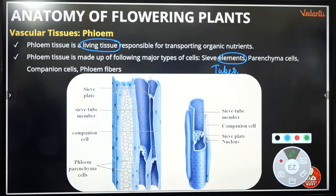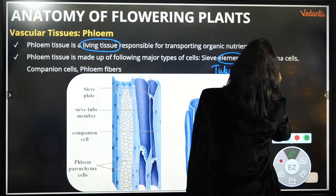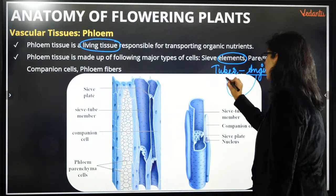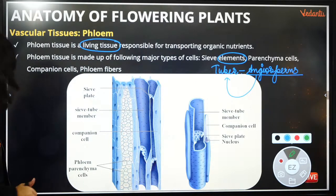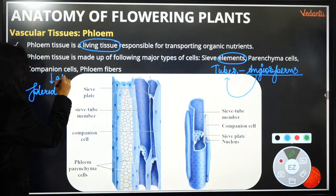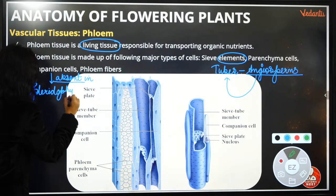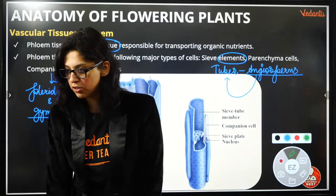Xylem transport is unidirectional — from root to leaves. Phloem transport is bi-directional — phloem can transport in both directions, either up or down. The companion cell has a nucleus because bi-directional transport requires a lot of information processing. Phloem fibers are dead — they are the bast fibers, also sclerenchymatous fibers.